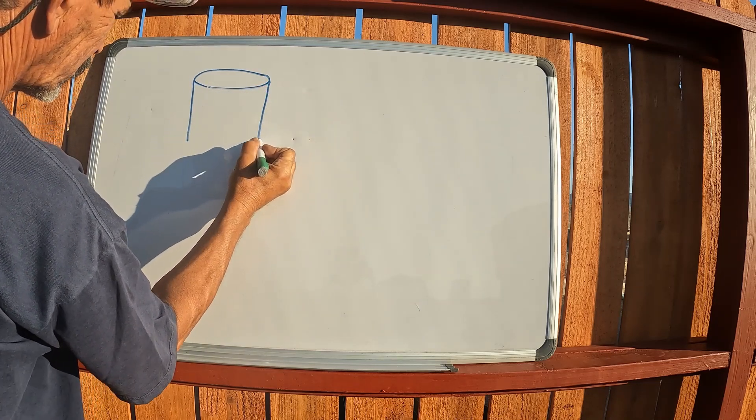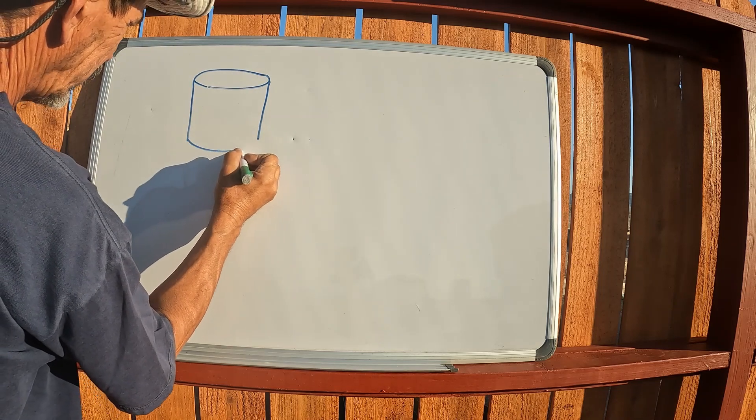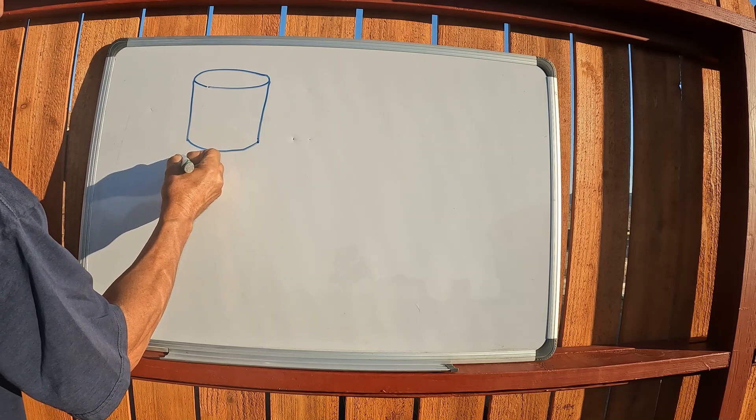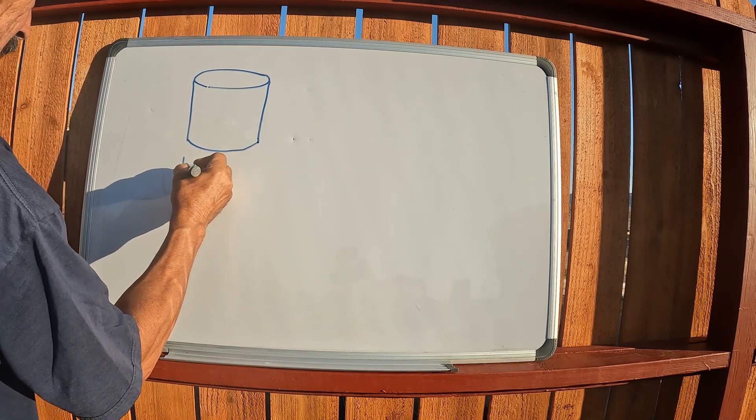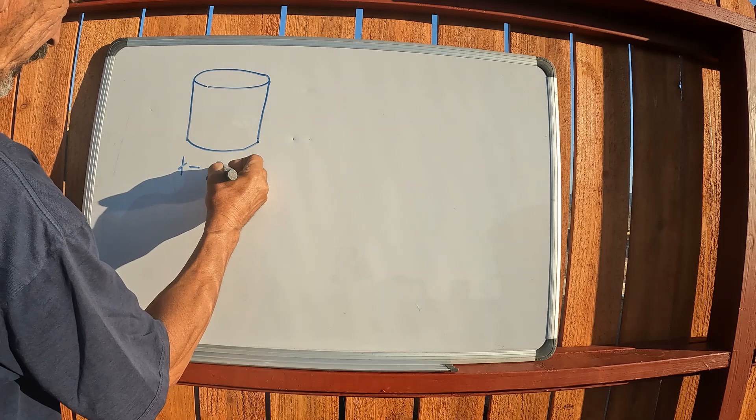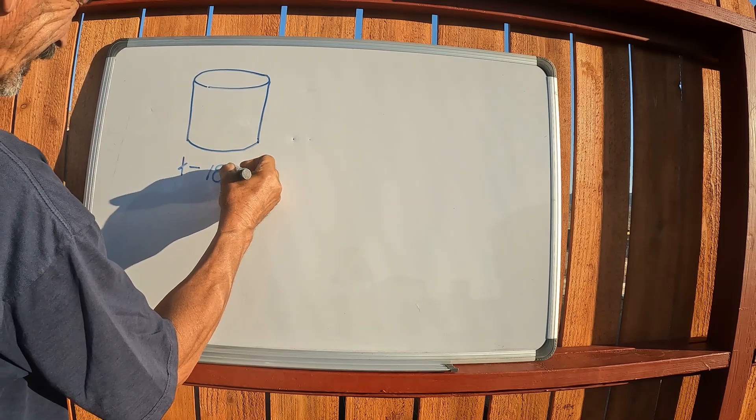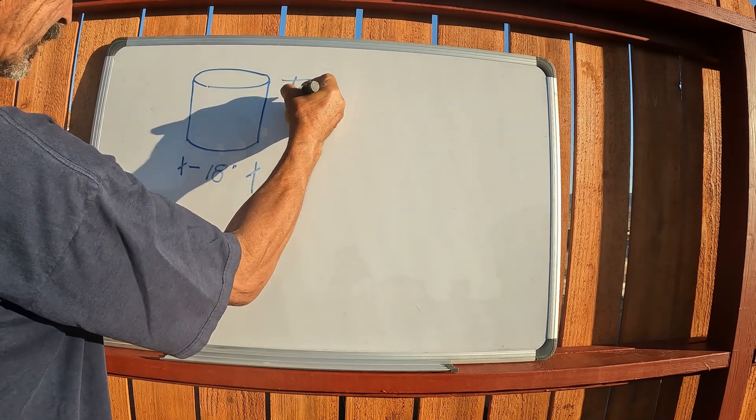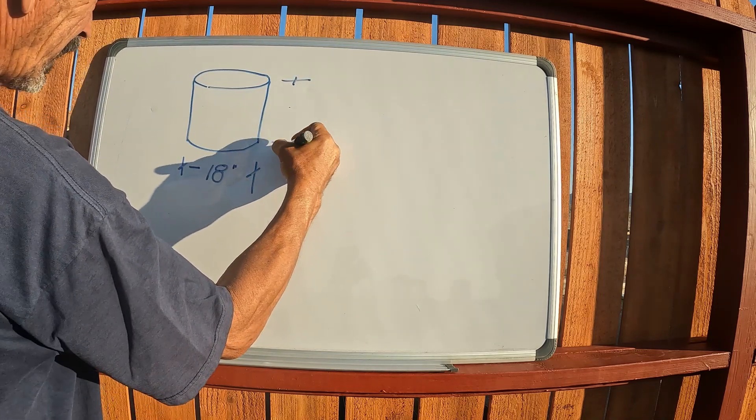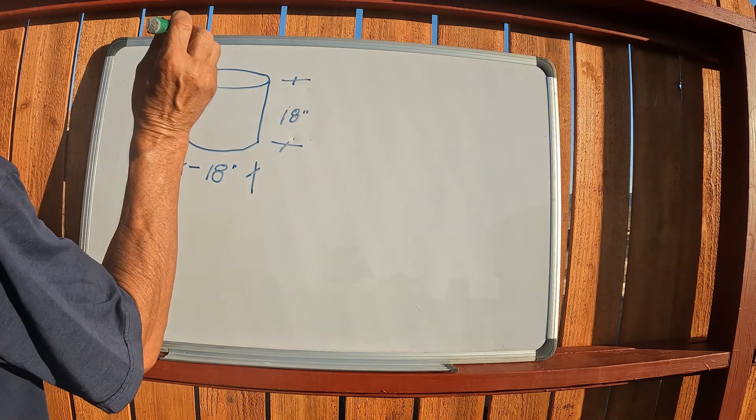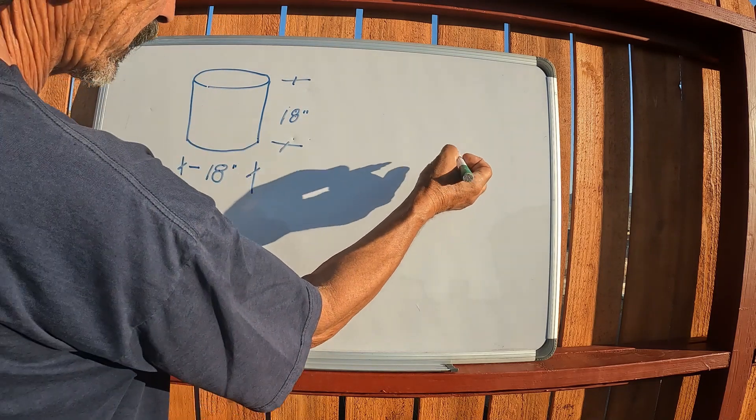I poured 18, I think it was 16 or 18 of these sono tubes. They're cardboard tubes you put concrete into, 18 inches in diameter if I remember correctly, and I went 18 inches in height. The reason I'm showing you this is because from that I came up with a formula.